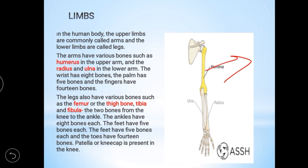The legs also have various bones: femur is the thigh bone, then tibia and fibula. The ankles have eight bones, the feet have five bones, and the toes have 14 bones. The patella — the kneecap — is present in the knee, between the thigh and the lower leg bone.